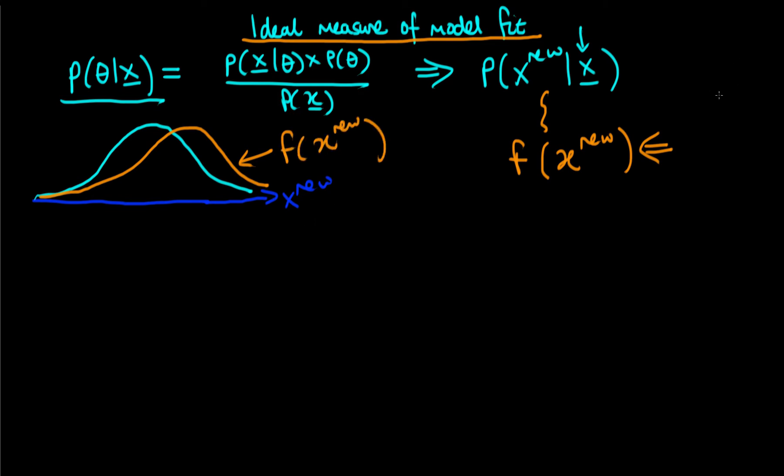So what's the best way that we can use to compare these two distributions? Well, we already know of a way, which is given by the Kullback-Leibler divergence. So what we could do is we could calculate the Kullback-Leibler divergence in going from F of X new, in other words our true distribution, to our posterior predictive distribution, P of X new given our vector X.